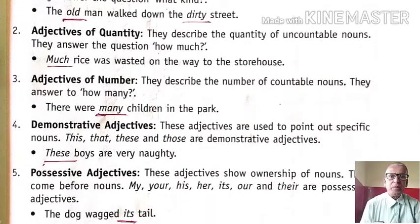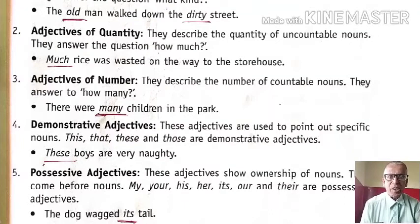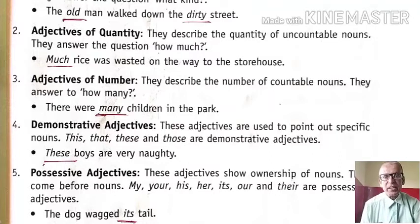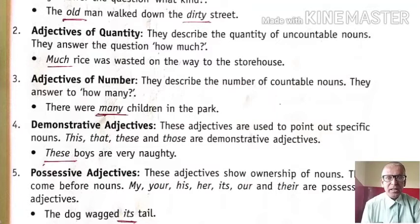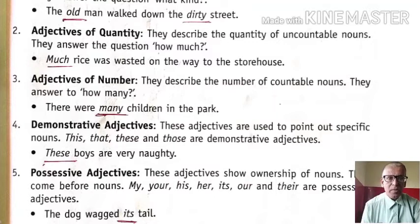Four, demonstrative adjectives. These adjectives are used to point out specific nouns. This, that, these, and those are demonstrative adjectives. So four words are there as demonstrative adjectives. This and that are used as singular ones, and these and those are used for plural ones.